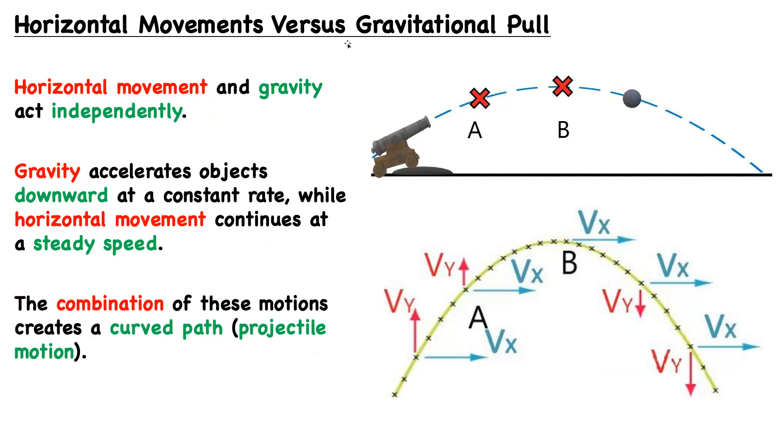Now let's talk about horizontal movements versus the gravitational pull. The takeaway is the following. Horizontal movement and gravity act independently. Gravity is acting downwards. So fundamentally, it does not have a role on horizontal movement.